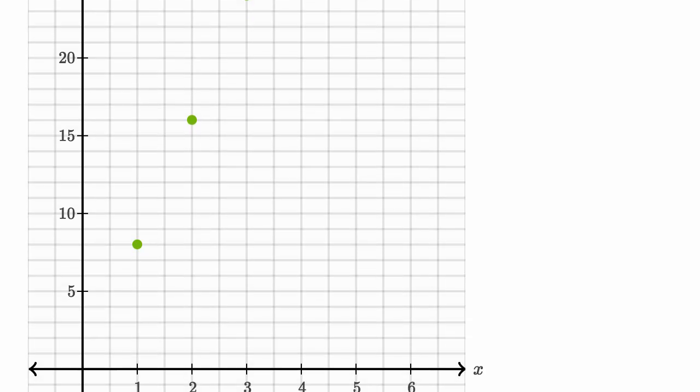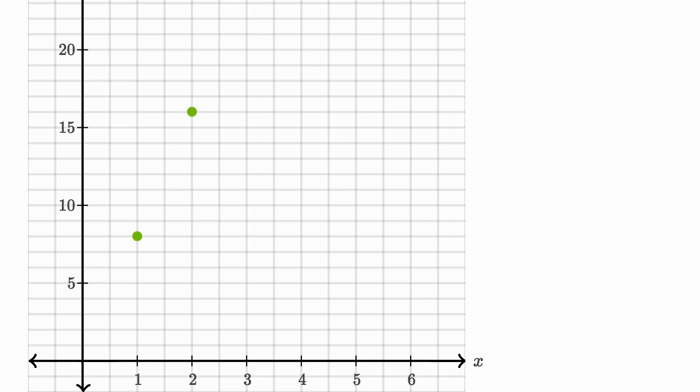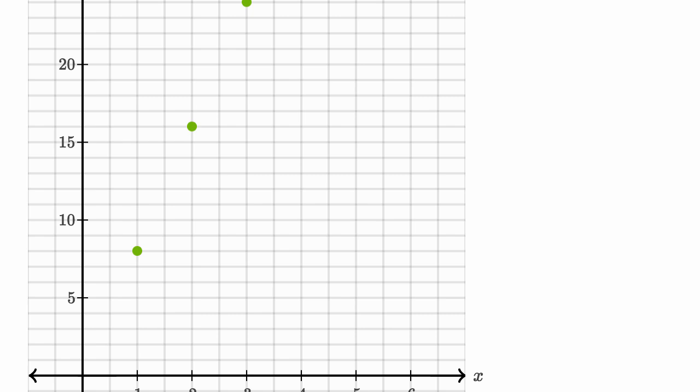And what you'll see, because the ratio between our batches and our cups of flour are constant, all of these points you could connect them all with one straight line. Every time we move one to the right, we're going to move 8 up. Every time we add another batch, we're going to have 8 more cups of flour.